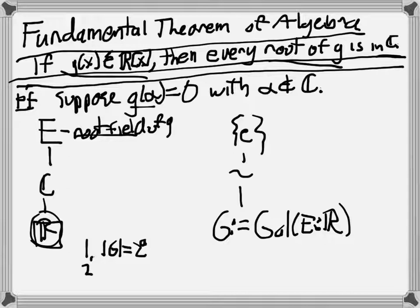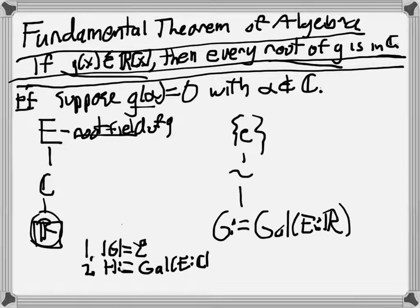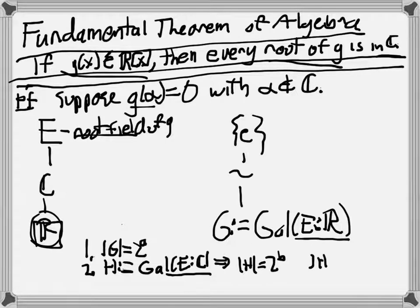Now that we know it's a 2-group, we can look at a subgroup of G, and the subgroup we're going to call H. That's going to be defined to be the Galois group of E over C. Notice that H is a subgroup of G — G is the Galois group of E over R, and so the Galois group E over C is going to be a subgroup. That means this is going to have 2-power order; the order of H equals 2^b. Then we're going to use a little bit of knowledge of p-groups — that is, groups of prime power order — to find a subgroup of index 2.